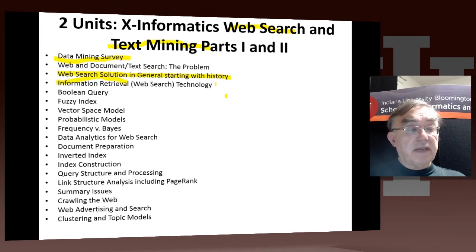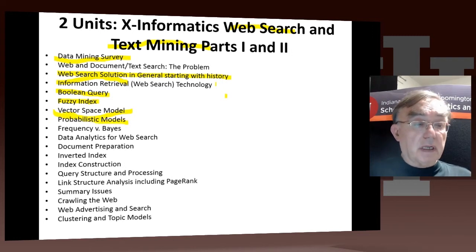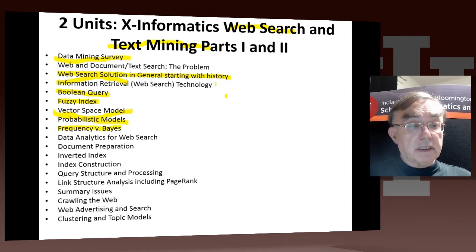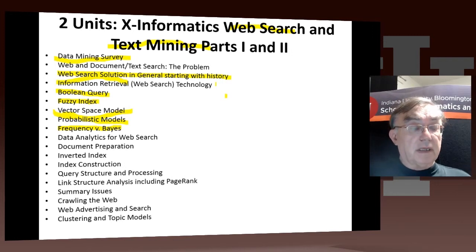There are various key features of information retrieval: the simplest Boolean query — a yes/no answer to a set of structured queries. We have fuzzy versions of that, vector space models, and probabilistic models. There's also a short diversion to discuss the different views of statistics: the frequency view versus the Bayesian view, which holds that a probability is not just a frequency but a measure of your belief that something is true.